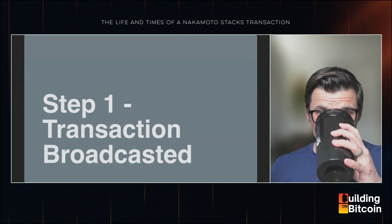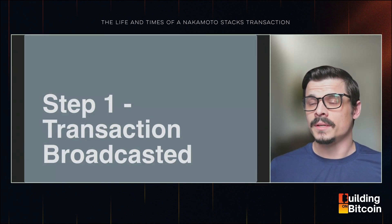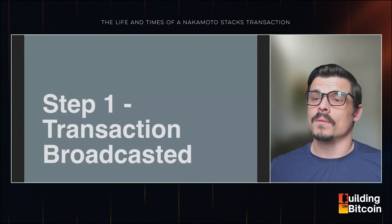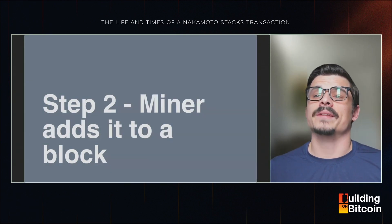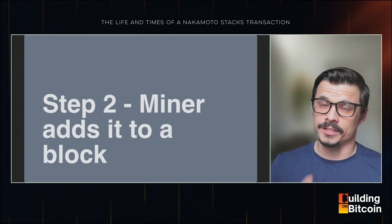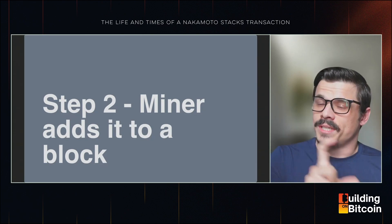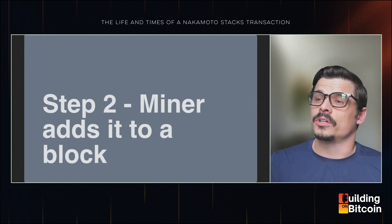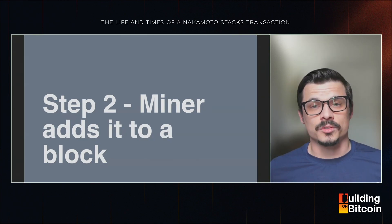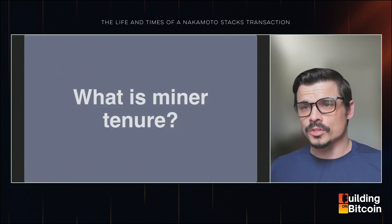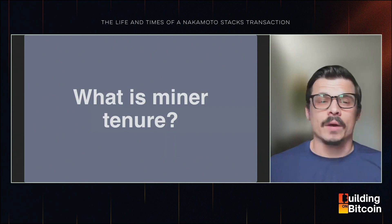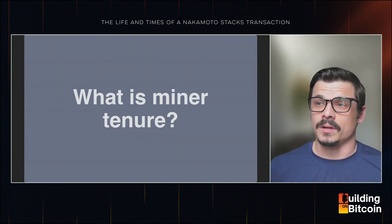Step one in the journey of a Nakamoto transaction: the transaction is broadcasted to the network. A user initiates a transaction on their wallet, it gets broadcasted up to the network and into the mempool. Step two: a miner adds it to a block. Assuming the transaction is valid, the miner whose tenure it is will detect that transaction and add it to the current Stacks block. This process happens on the order of seconds.